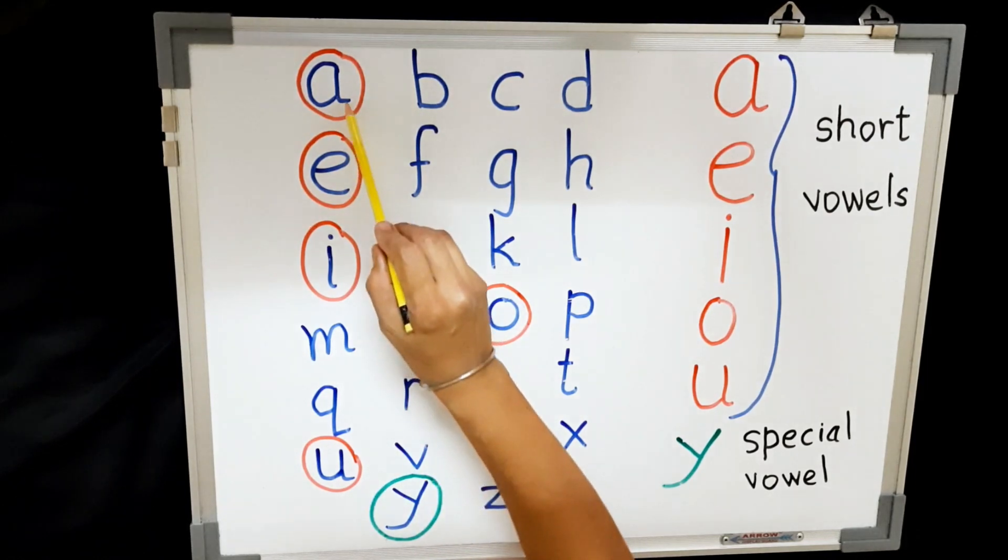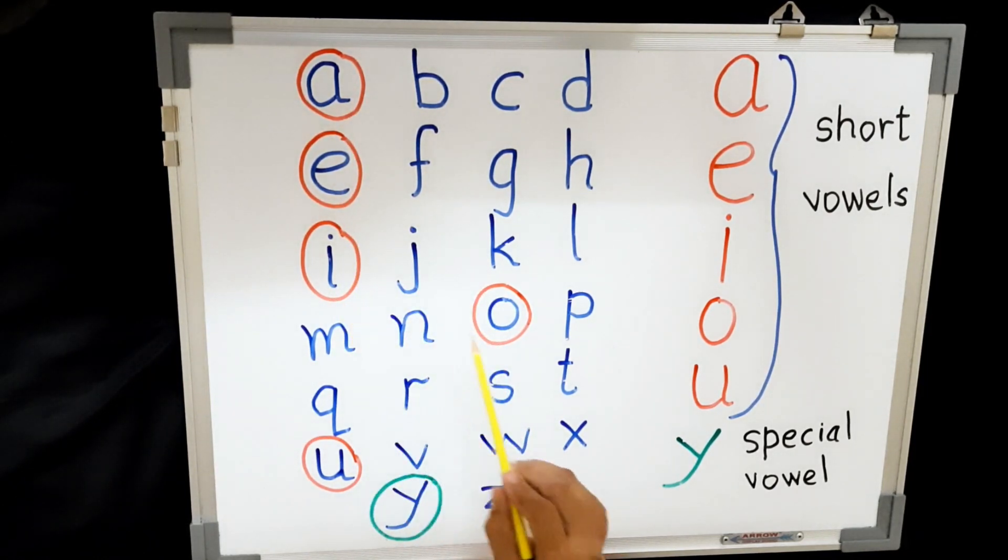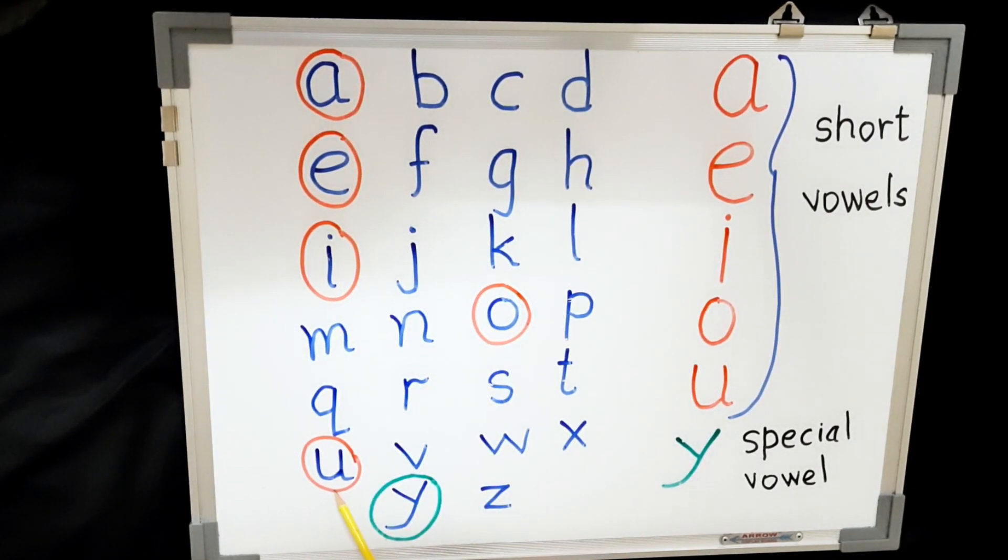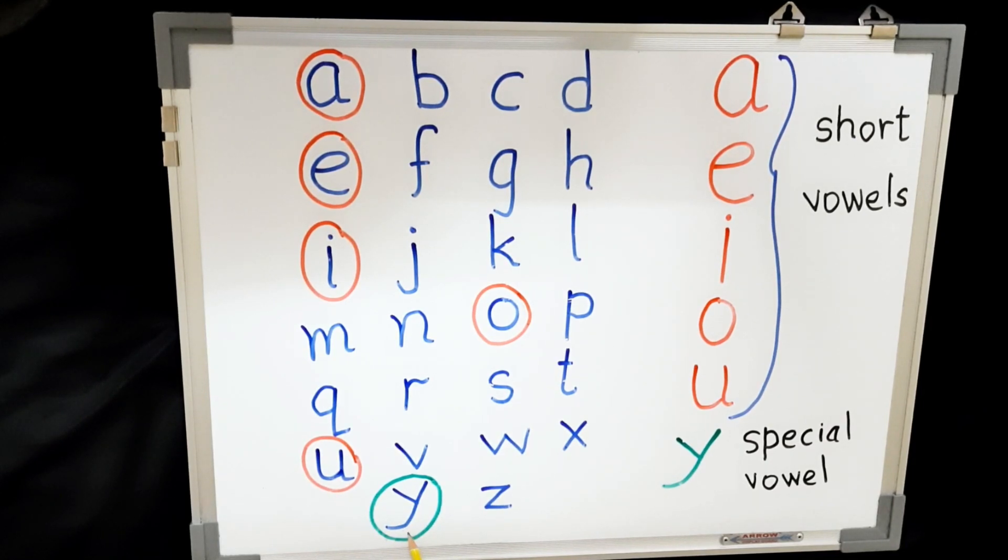Out of these, A, E, I, O, U are short vowels. And Y, this is a special vowel. And rest of all are consonants.